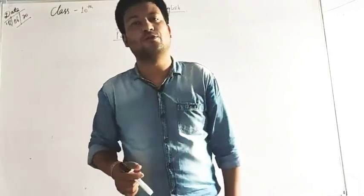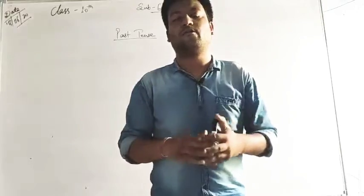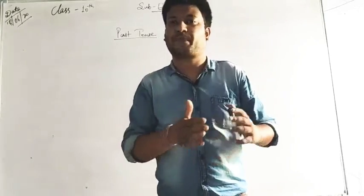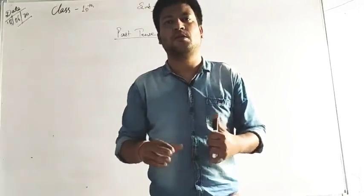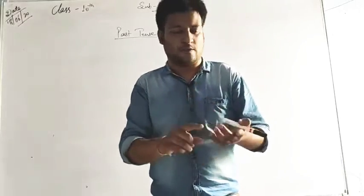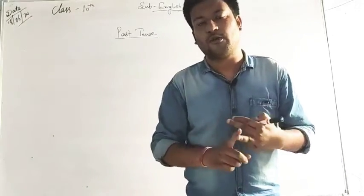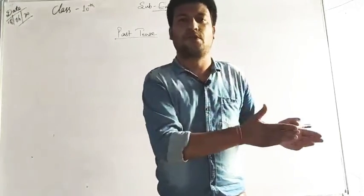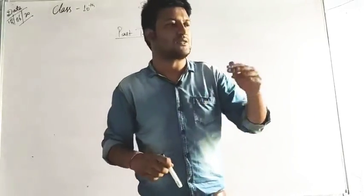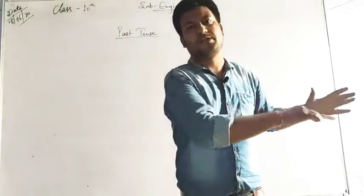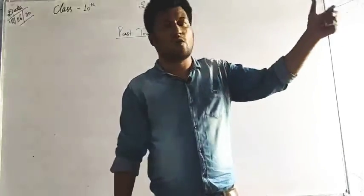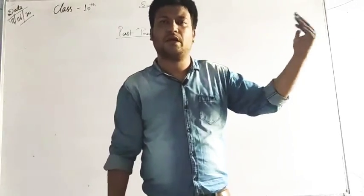Good morning, dear students. Today we are going to study about the past tense. What we have completed is the present tense — all four parts: simple, continuous, perfect, and perfect continuous. We have done exercises and learned the formulas. Past tense is something which is over or finished before the present time. The current time is called present time, whereas what is over before this time is called past tense.